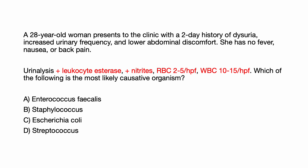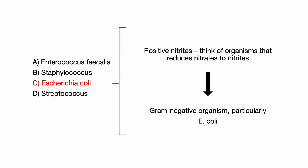Which of the following is the most likely causative organism: Enterococcus, Staph, E. coli, or Strep? The correct answer is E. coli. E. coli is the most common cause of uncomplicated UTI, responsible for about 75-90% of cases. The presence of positive nitrites on urinalysis is a key clue suggesting infection with a gram-negative organism like E. coli because it reduces nitrates to nitrites. The other organisms listed do not typically produce nitrites. Thus, in a young, sexually active woman with classic symptoms of a UTI and a positive nitrite test, E. coli is the most likely pathogen.